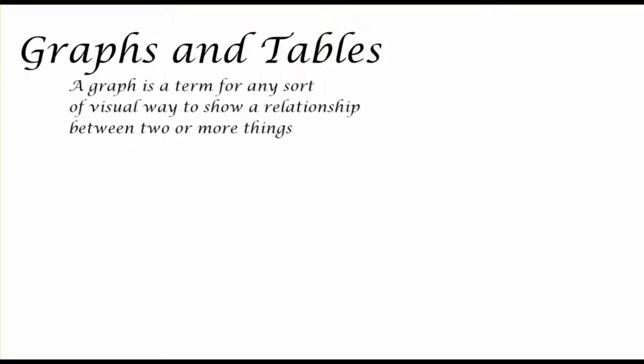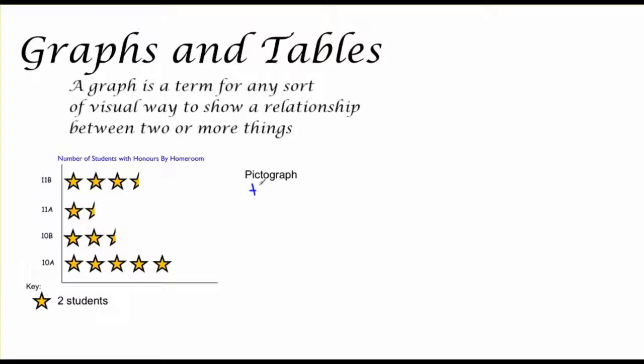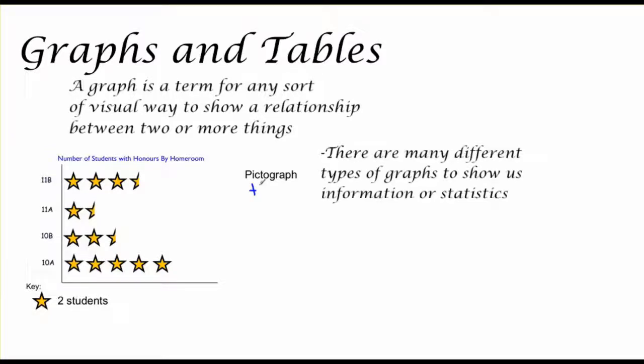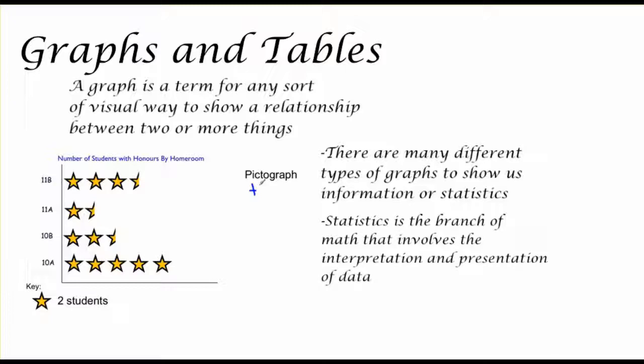A graph is a term for any sort of visual way to show a relationship between two or more things. Here's an example of a very easy graph that many of you may have seen before. It is called a pictograph. There are many different types of graphs to show us information or statistics. Well, statistics is a branch of math that involves the interpretation and presentation of data.